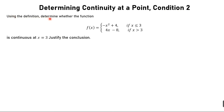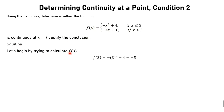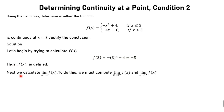Determining continuity at a point using condition two. Using the definition, determine whether the function is continuous at x = 3. We check the continuity at x = 3. We calculate f(3) using the expression for x ≤ 3, and after substituting we get −5. The function is defined. Now we calculate the limit as x approaches 3 by computing the left and right limits.